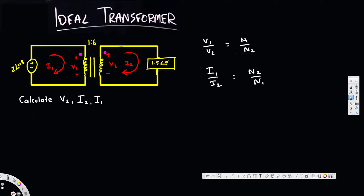Now we have to decide whether this ratio is going to be positive or negative. For the first equation, to decide the sign, you have to look at the dot convention — both dots have to be in the positive terminal, or both in the negative, in order to have the positive equation. Since we have both of them in the positive, this ratio is positive.